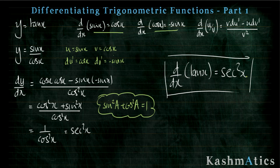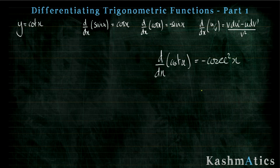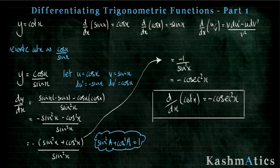Pause the video if you need to before we move on, but here's yours to try: y equals cot x. We're aiming for d by dx of cot x equals minus cosec squared x. Pause the video, give it a go, and I'll put the answer up in a bit. Hopefully you were able to do that — it wasn't too different from the one for tan x; you just have to be careful with your minuses and pluses. Let's move on.